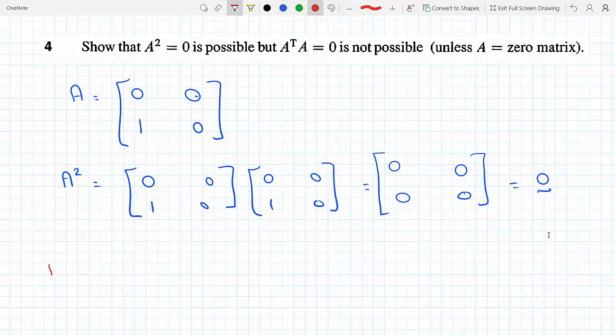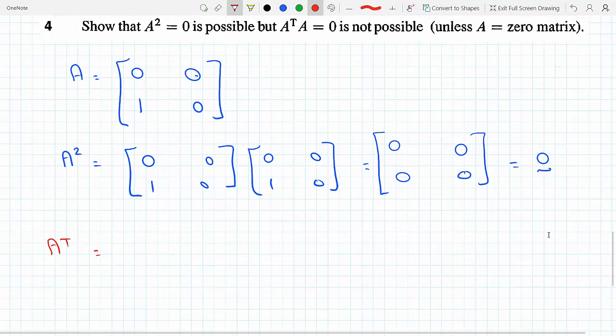A transpose: the row becomes a column, or the column becomes a row. So the first row [0,0] becomes the first column. The second row from A, [1,0], becomes the second column.